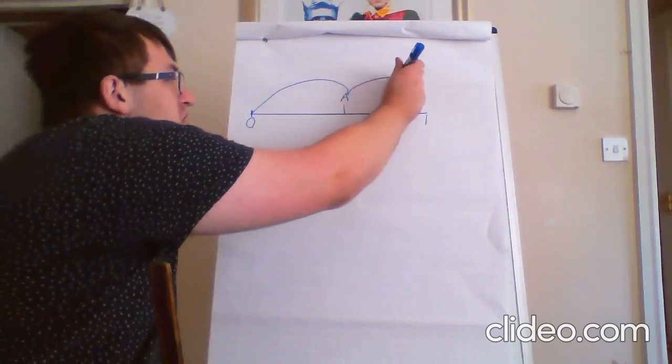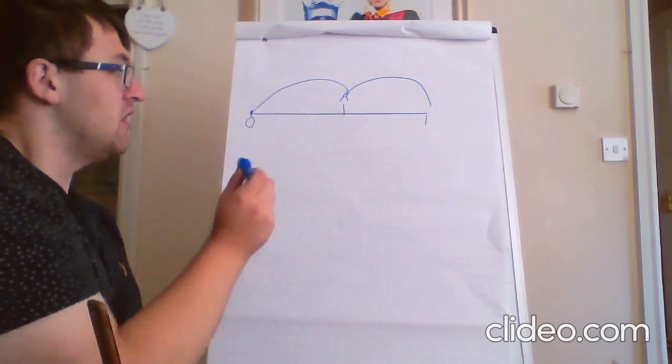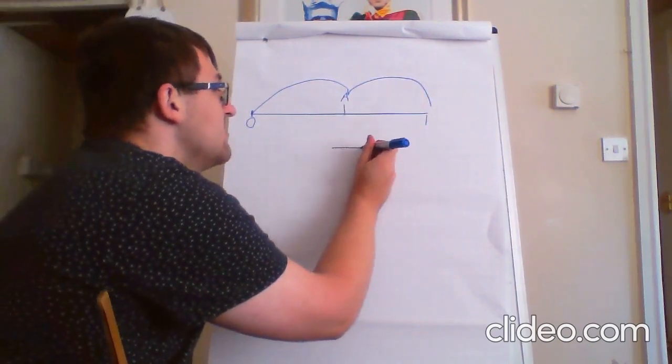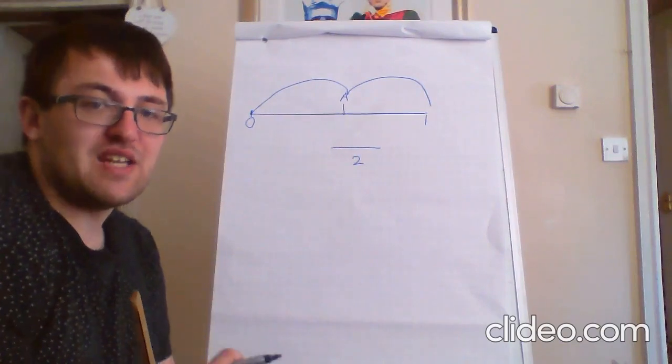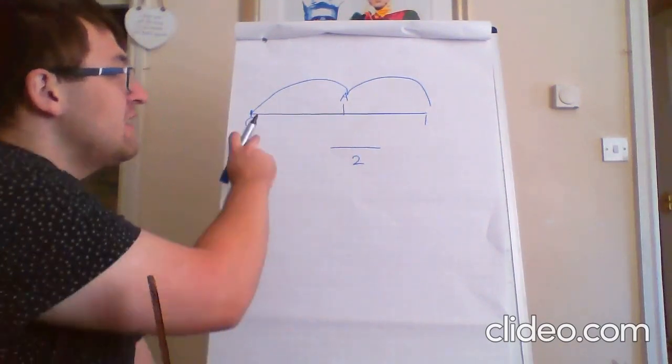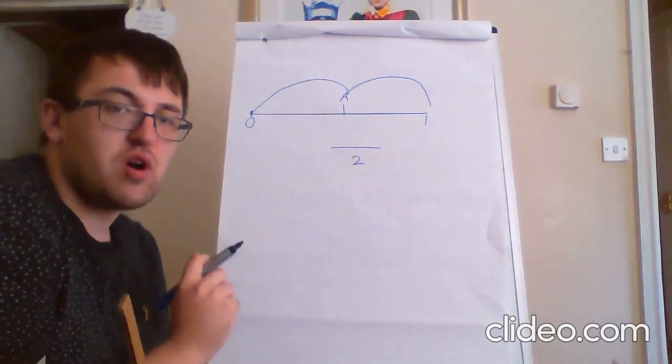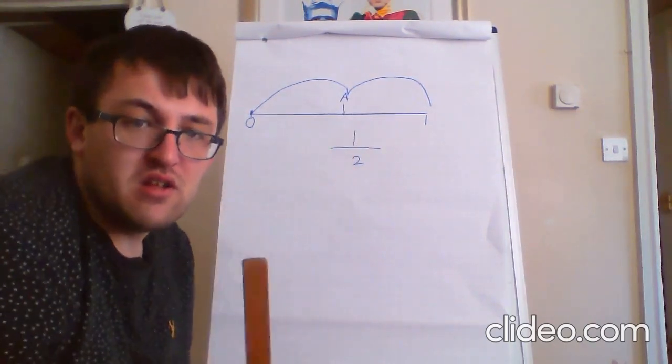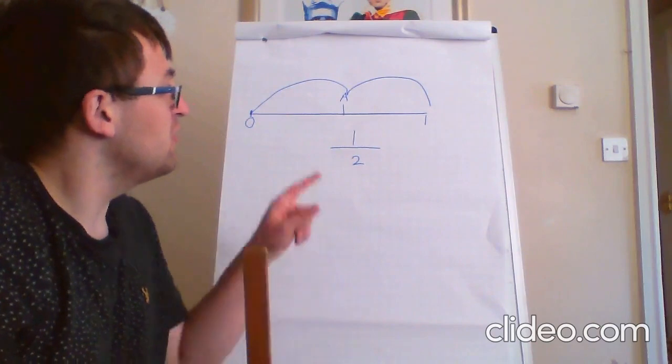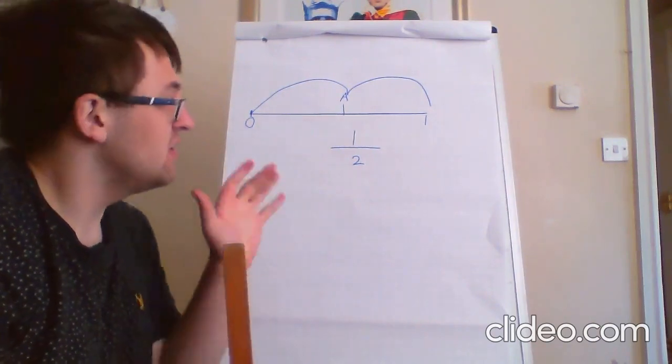And then to get to one, we do another jump. So, that's two jumps. So, our denominator is two. How many jumps has it taken us to get from zero to A? Well, that's one. So, which means our numerator is one. So, the fraction shown by letter A is a half.